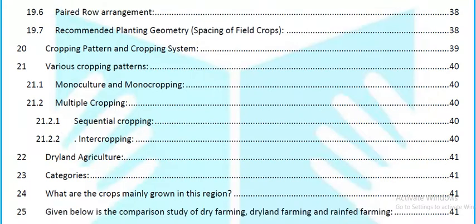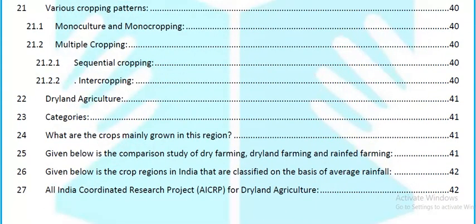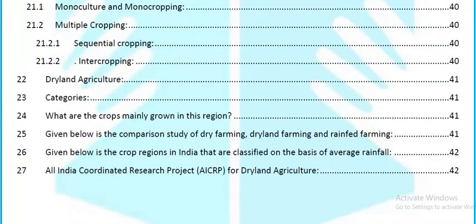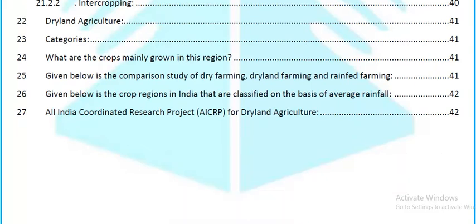Cropping patterns — monoculture and monocropping, multiple cropping, sequential cropping, intercropping, and dryland agriculture. Categories of dryland agriculture, crops mainly grown in this region, a comparison study of dry farming, dryland farming, and rainpet farming, crops regions in India classified on the basis of average rainfall, and the All India Coordinated Research Project for dryland agriculture.